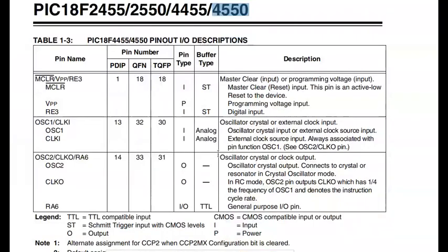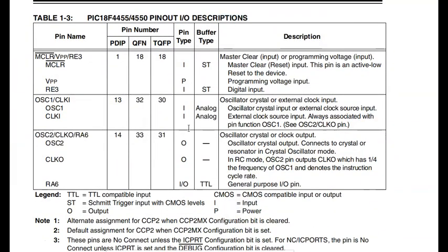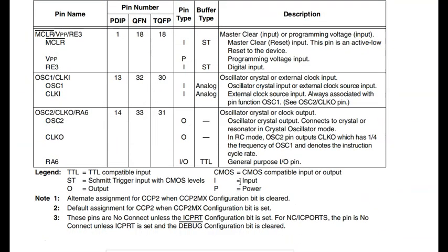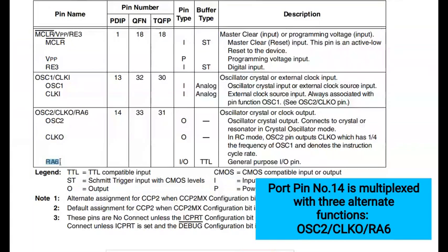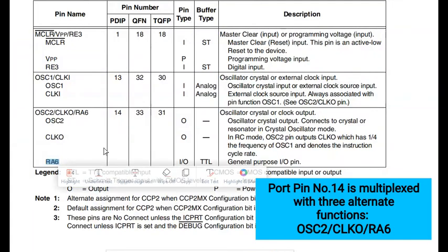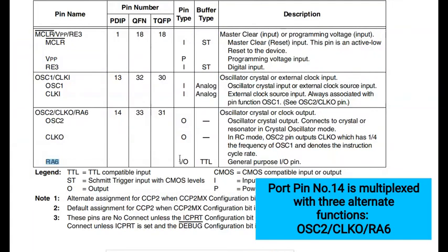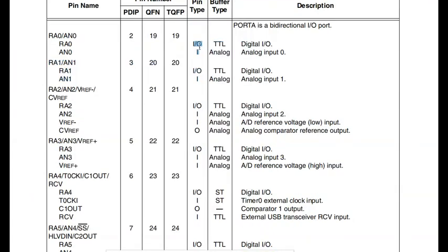The pins of the controller will either act as input pins or output pins. For example, the RA6 pin of Port A has a pin type that is both input and output. Similarly, you can see the description of different pins in the datasheet.